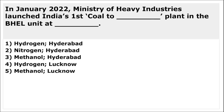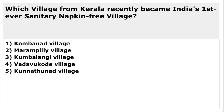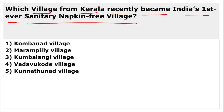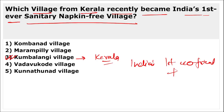The Ministry of Heavy Industries launched India's first coal-to-methanol plant in Hyderabad. Kumbalangi village in Kerala became India's first ever sanitary napkin-free village — it is also known as India's first eco-friendly tourist village.